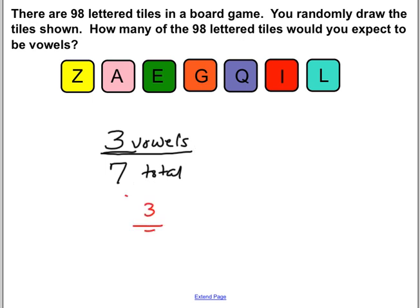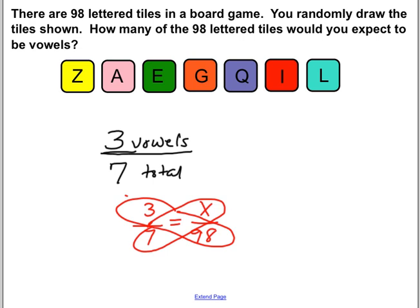So if we made a proportion, you want to find out how many would be in 98. Well, if three out of seven is in these seven tiles, so three vowels out of seven, then the next one would be X, which you're looking for, over 98. And when you cross multiply, so three times 98 and seven times X, three times 98 is 294. And seven times X is seven X. To get X by itself, you divide by seven on both sides. And that ends up being 42.